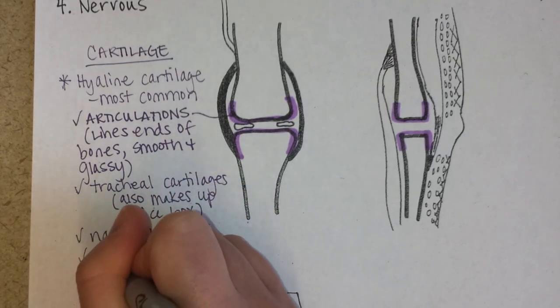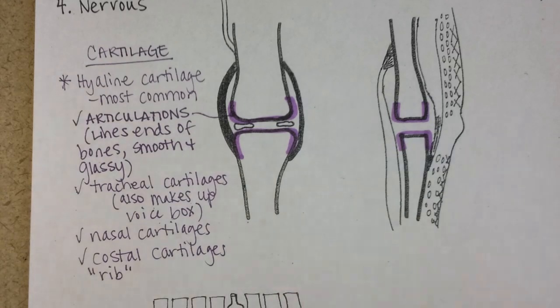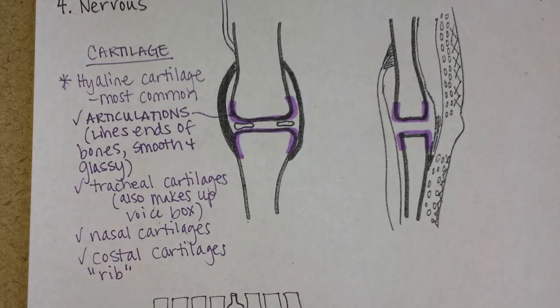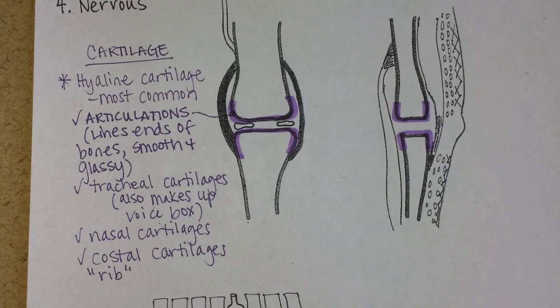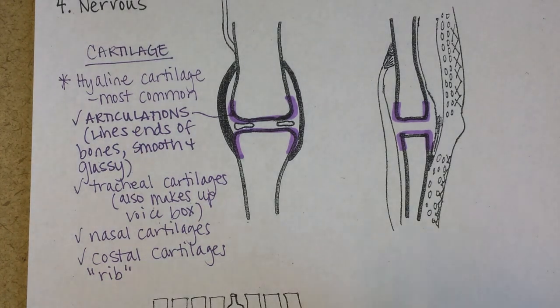Costal cartilage — the word costal means rib — and these are cartilages that connect your ribs to your sternum.